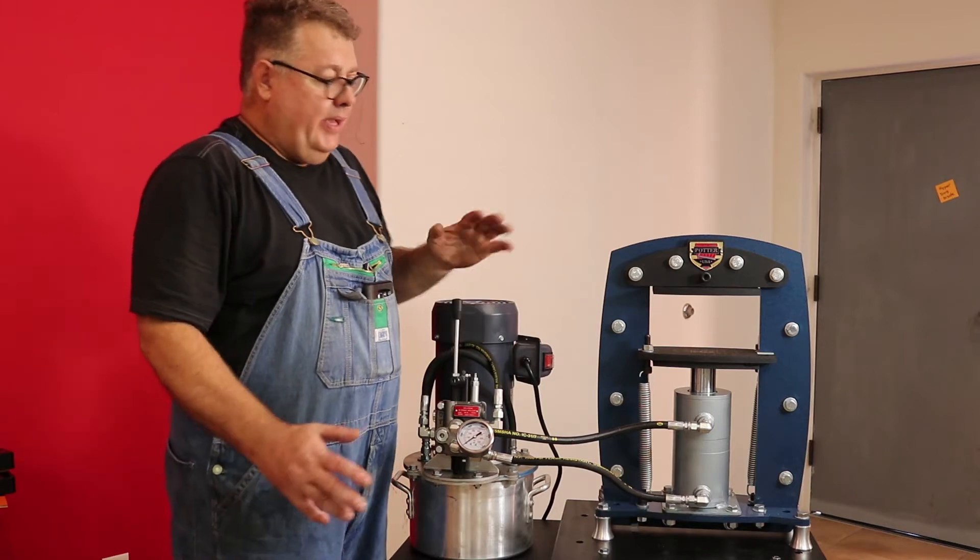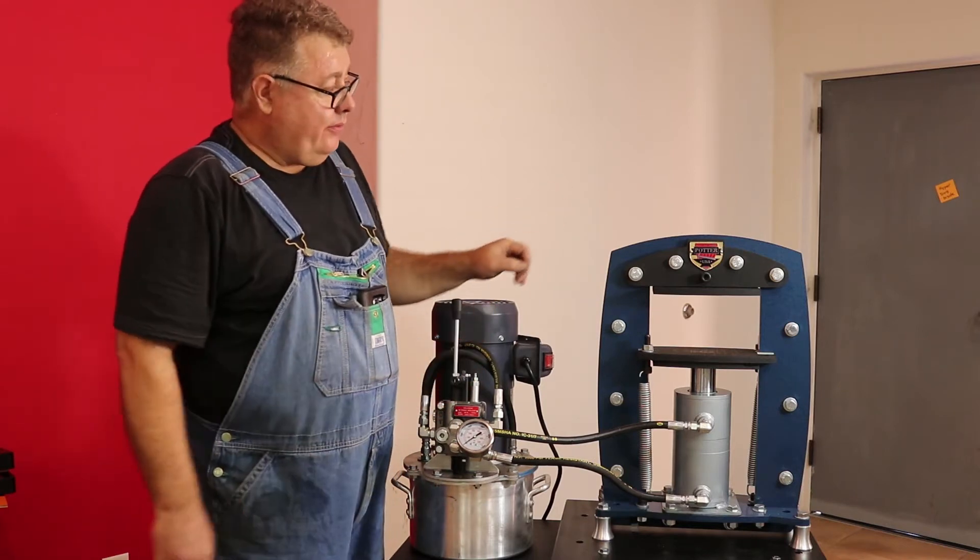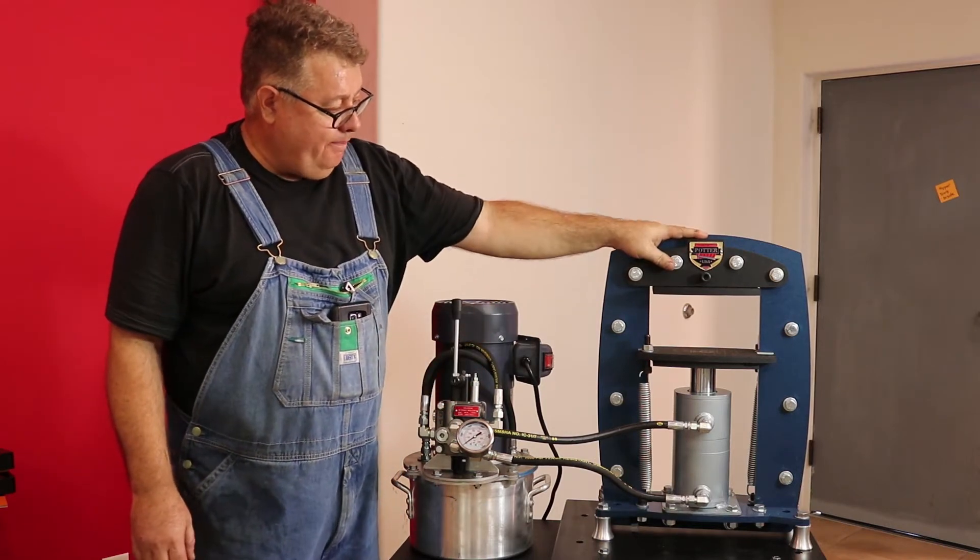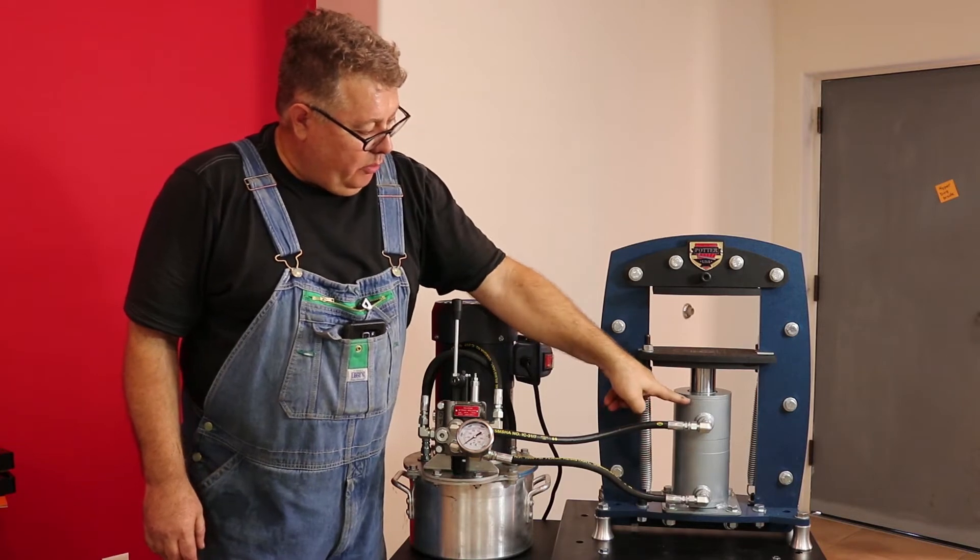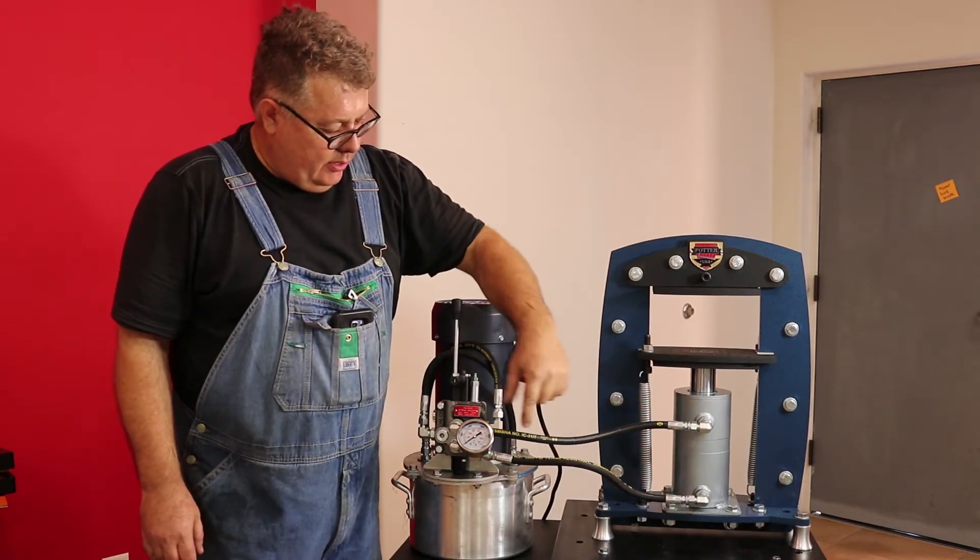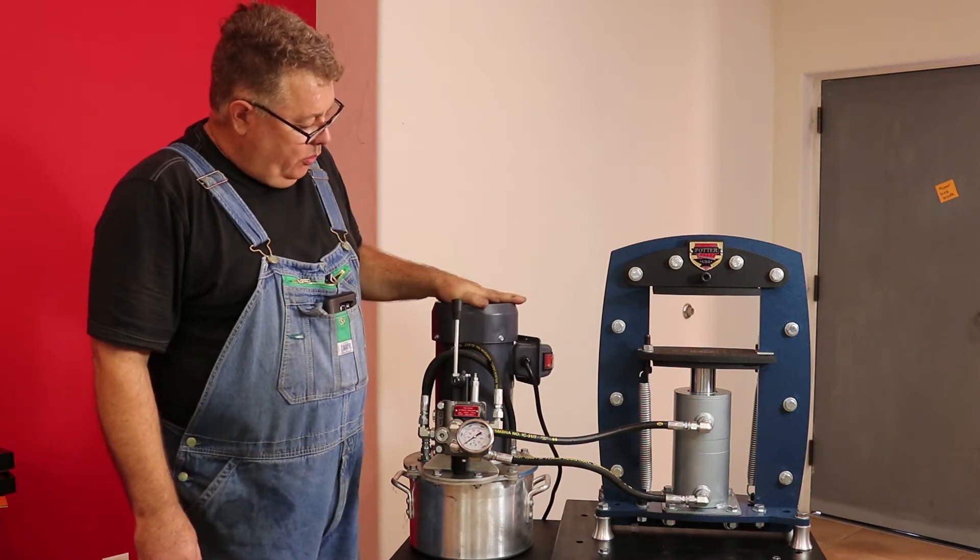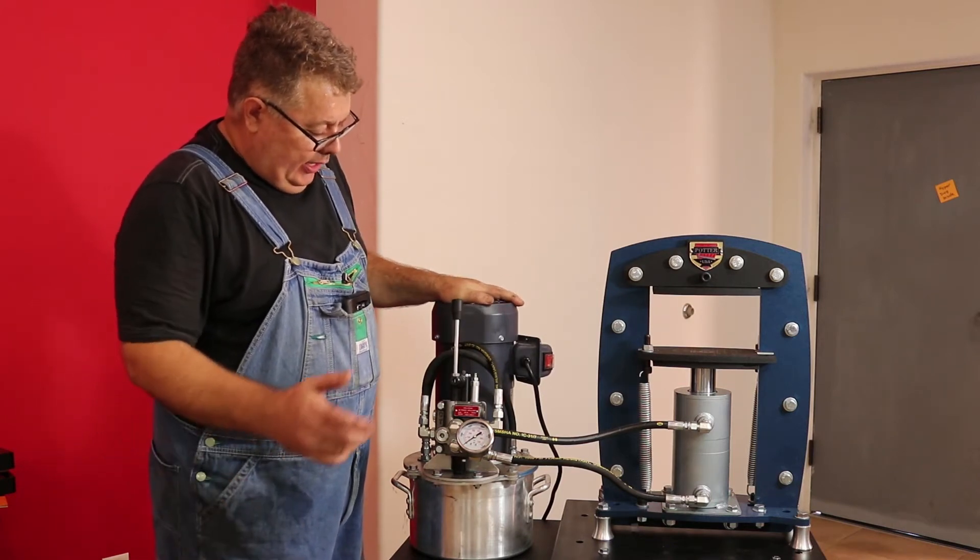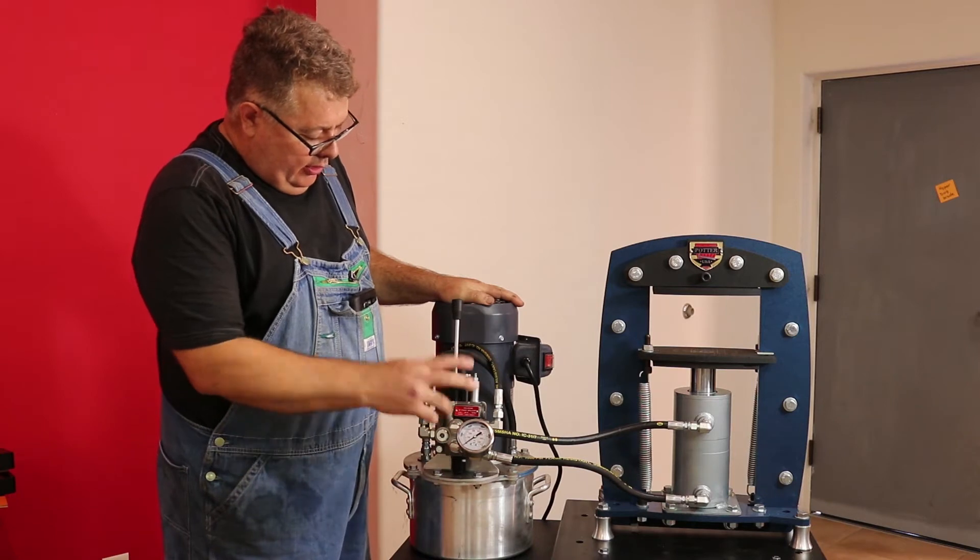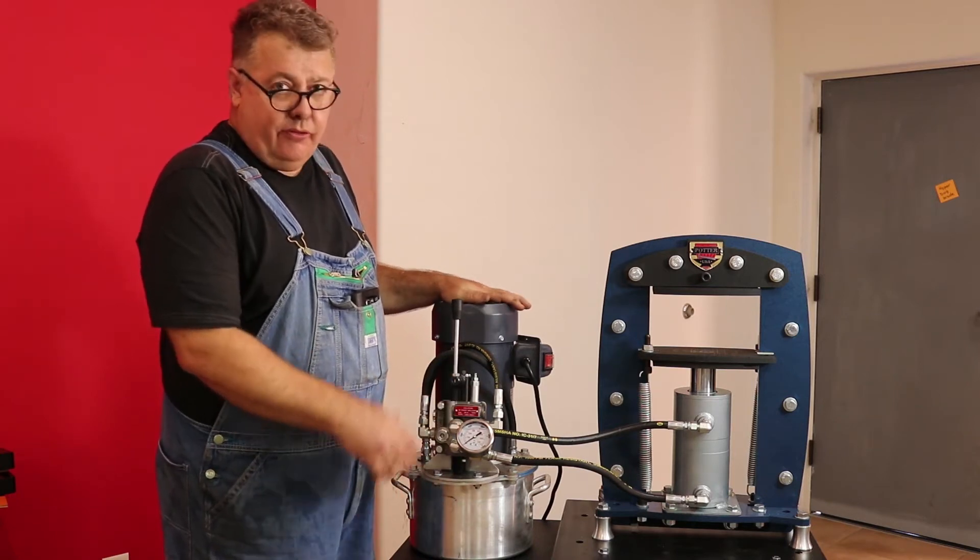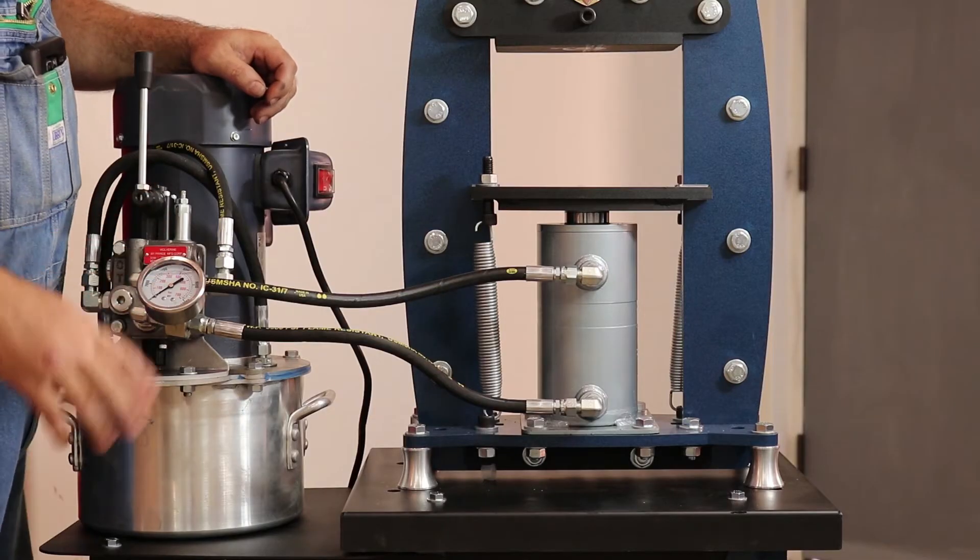The basic 20-ton electric hydraulic press consists of the frame, the hydraulic ram, hoses, gauge, and the pump. The pump is a 1-horsepower motor and we use off-the-shelf industrial hydraulic components, so this machine can be repaired anywhere on the planet.